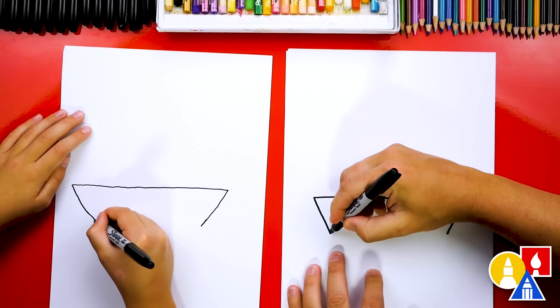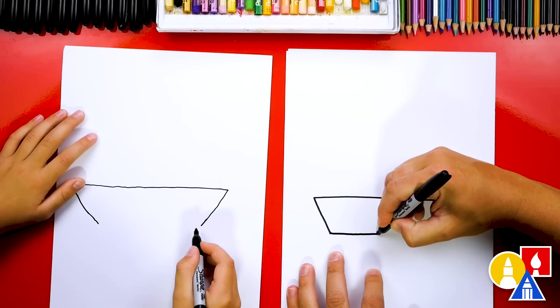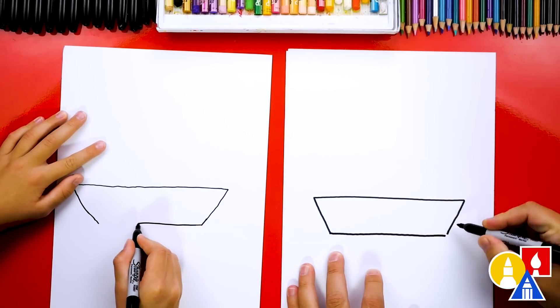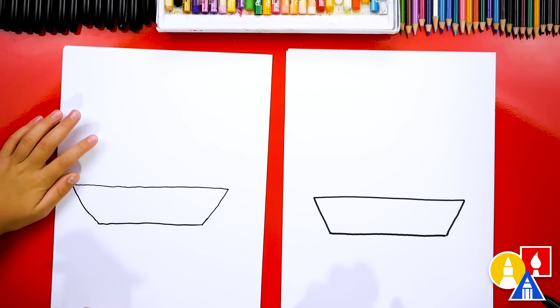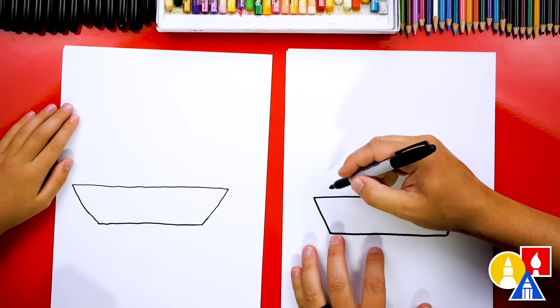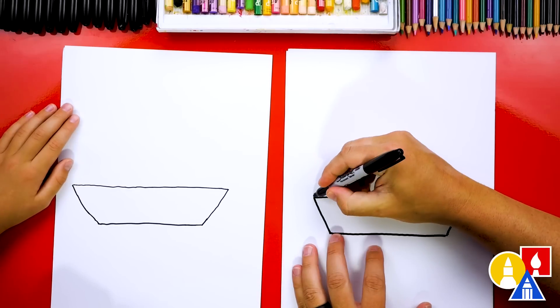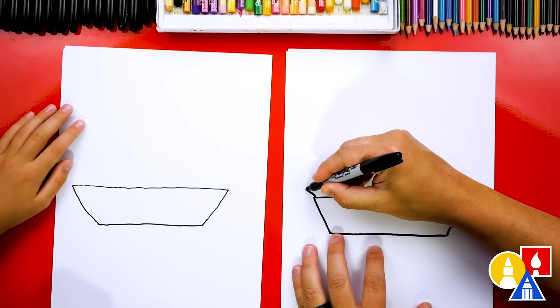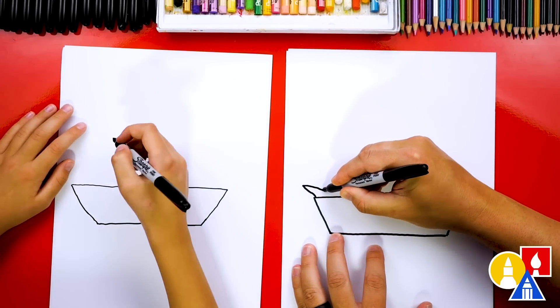And then let's draw the bottom. We'll connect these two diagonal lines with another horizontal line all the way across. And then we can draw the little paper that sometimes is inside also. So I'm going to draw a little paper that comes up and then down.